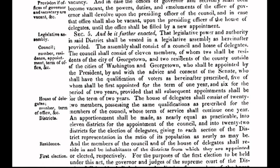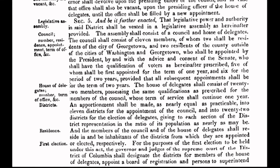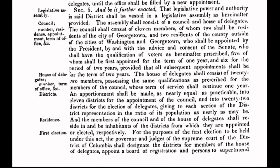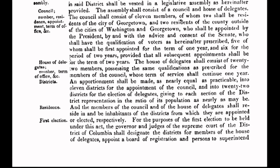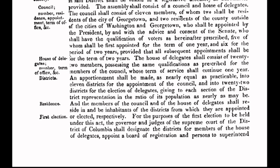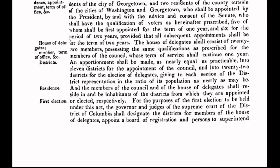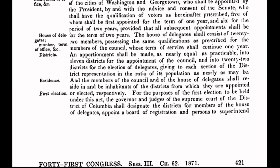Our original declaration states that government is subject to the consent of the governed — and that's us. It doesn't take a constitutional historian to figure out that the United States government has not been subject to the consent of the governed since long before you and I were born. Rather, the governed are subject to the whim and greed of the corporation, which has stretched its tentacles beyond the 10-mile-square parcel of land known as the District of Columbia. In fact, it has invaded every state of the republic. The corporation has no jurisdiction beyond the District of Columbia — you just think it does.